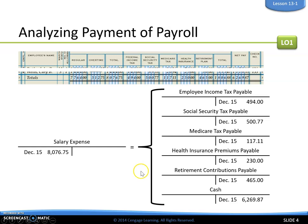Salary expense is debited for the total amount of earnings — that's the total earnings for all employees. Then we break it down and credit all of our deductions. Notice that all of these deductions are payable accounts; they are a liability right now. We are not actually paying them — we are just recording what we owe.